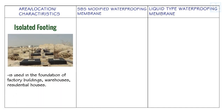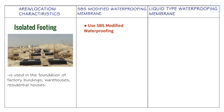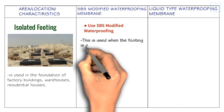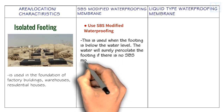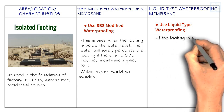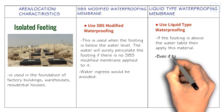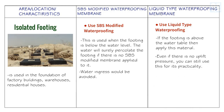For isolated footing — used in the foundation of factory buildings, warehouses, and residential houses — use SBS modified waterproofing when the footing is below the water table, as water will percolate the footing without it. You can also use liquid waterproofing if the footing is above the water table, since there is no uplift pressure and this material is practical for that condition.